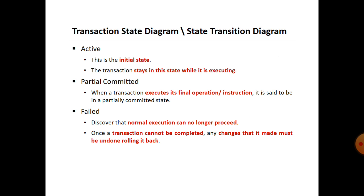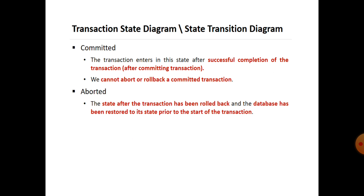Active state is the initial state — the transaction remains in this state while it is executing. Partially Committed: when a transaction executes its final operation, it is said to be in a partially committed state. Failed state: normal execution can no longer proceed; once a transaction cannot be completed, any changes made must be undone by rolling it back. Committed: the transaction enters this state after successful completion, and we cannot abort or roll back a committed transaction. Aborted: the state after the transaction has been rolled back and the database has been restored to its prior state.